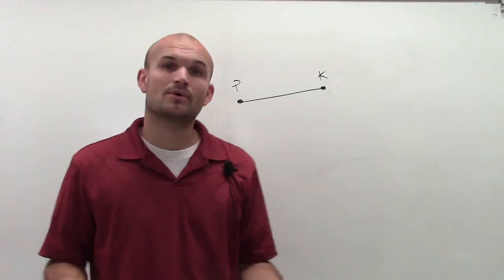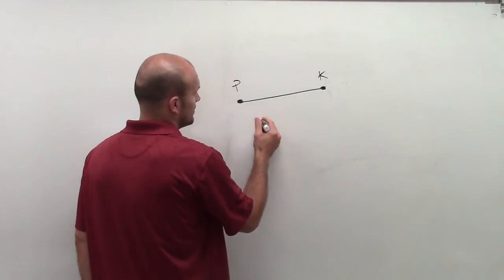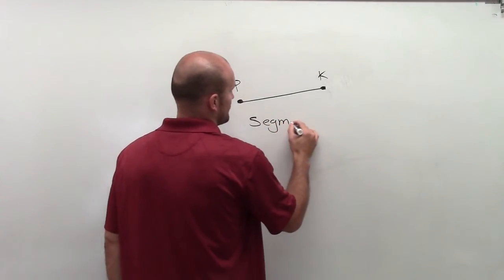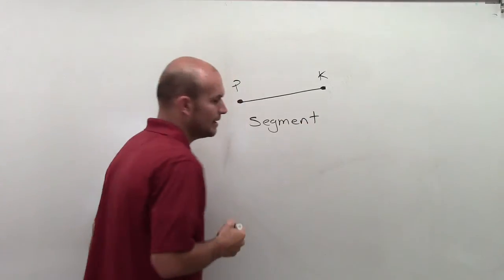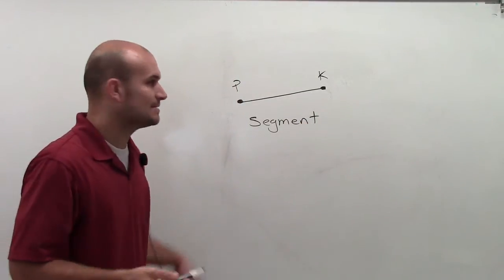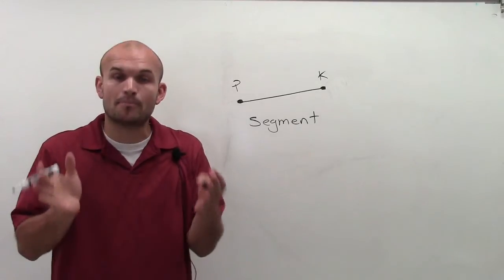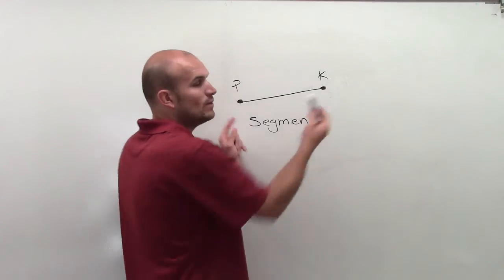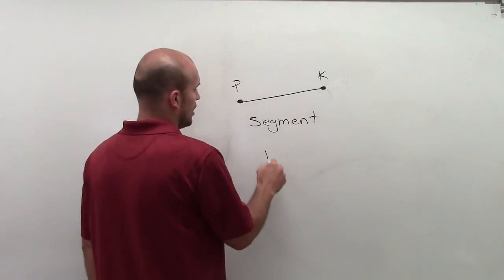Well, then what we're going to call this portion of a line is called a segment. Now, what's different with a segment compared to a line is a segment is a portion of a line that is between two points.